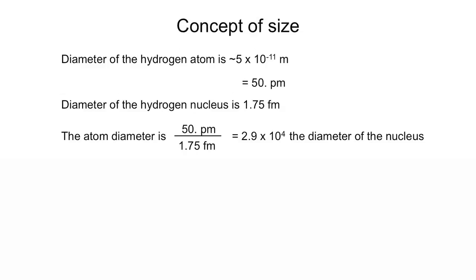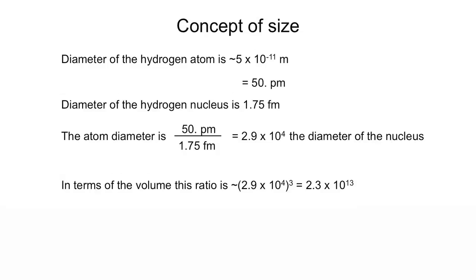We see that the diameter of the atom as a whole is much larger than the diameter of the nucleus. In terms of the volume, this ratio is 2.3 × 10¹³. That means that the nucleus is only a tiny fraction of the total volume of the atom. It also means that the atom is mostly empty space.